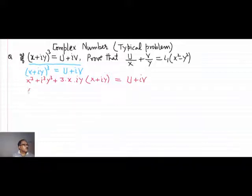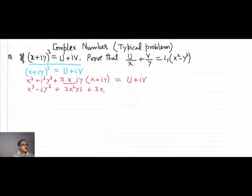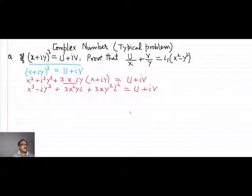Here x³ is the first term. The value of i³ is minus i, so you may write minus iy³. Then expanding the product 3·x·iy·(x + iy) gives 3x²yi + 3xy·(iy). So we get x³ minus iy³ plus 3x²yi, and this is all equal to u plus iv on the right-hand side.